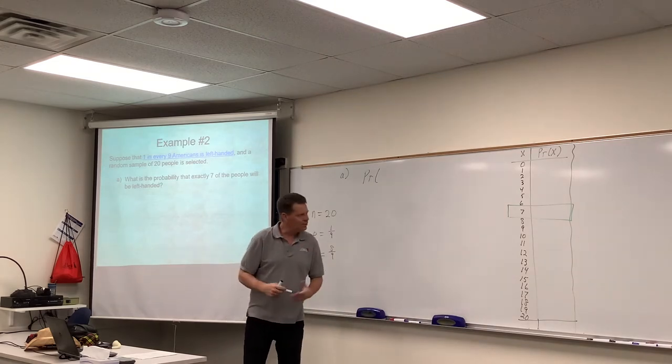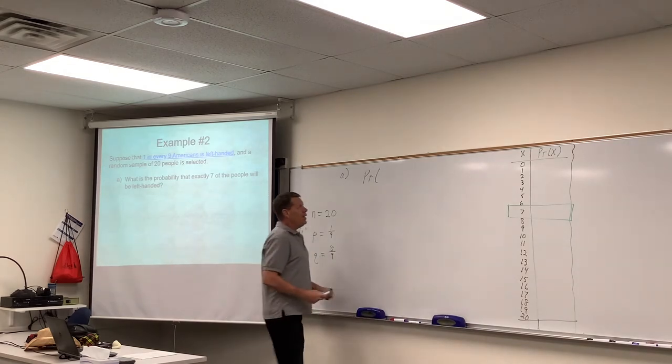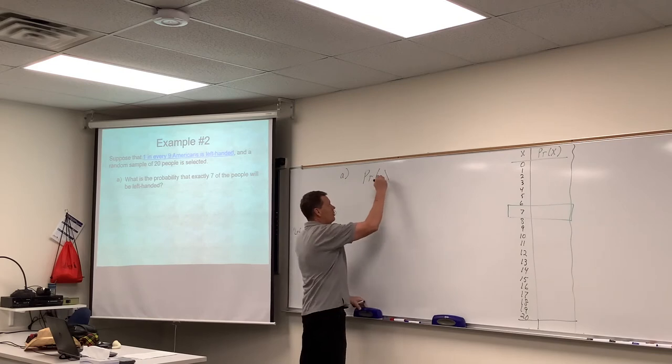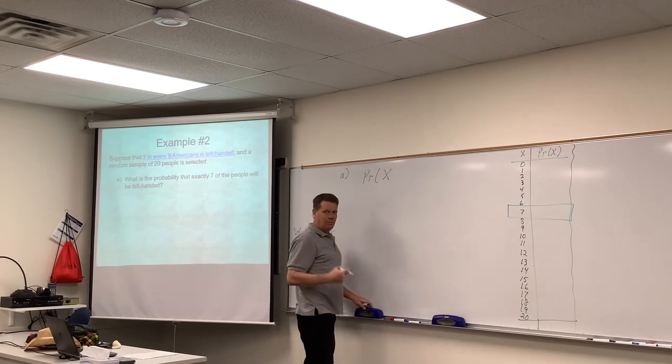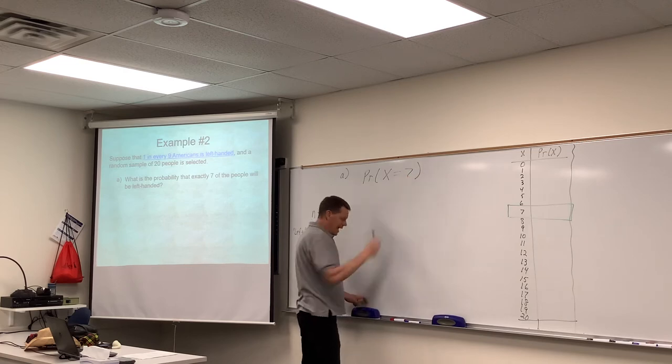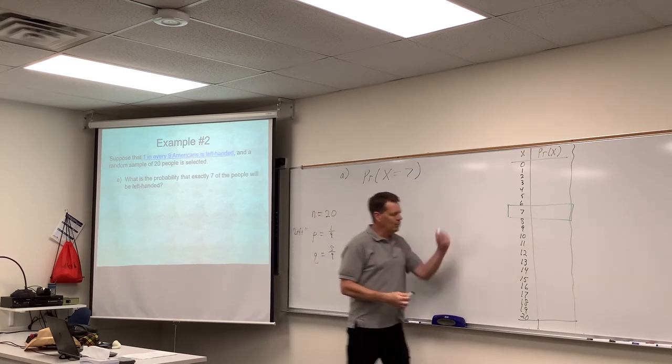And I'm sorry for the quality of this. We're doing the best we can. In other words, what's the probability that the number of people who are left-handed, the variable X, is equal to seven? Exactly seven. An individual number over here.